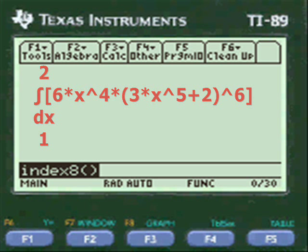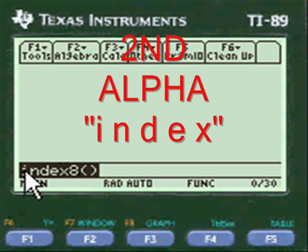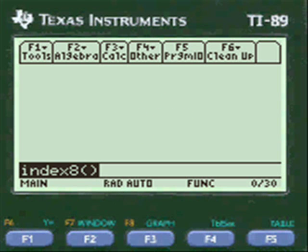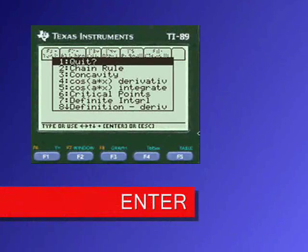You go to u-substitution. Let's get started here. We're going to put second alpha and put INDEX into the entry line of the calculator, press alpha and put the 8 in the open and close parenthesis, press enter and you're into my menu.